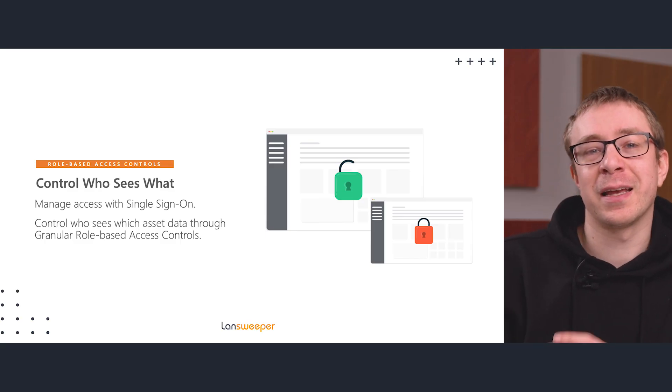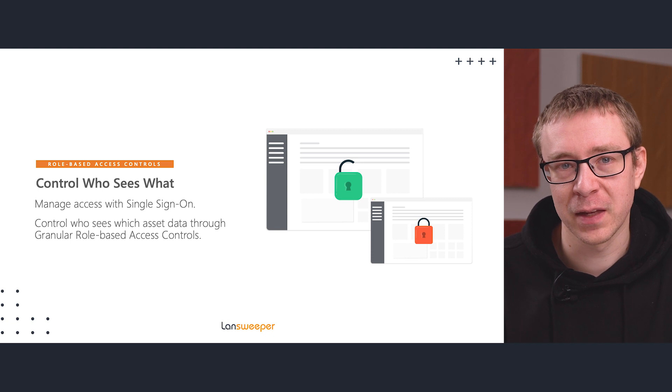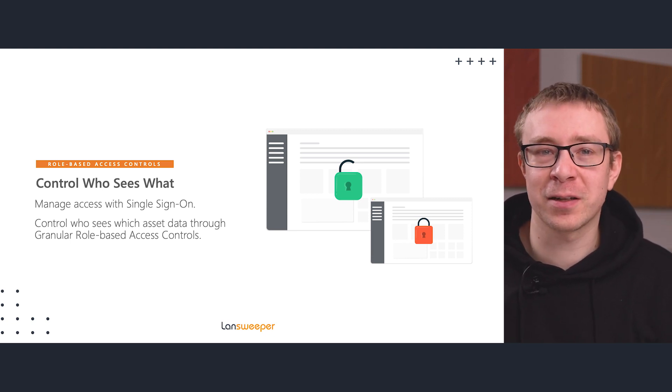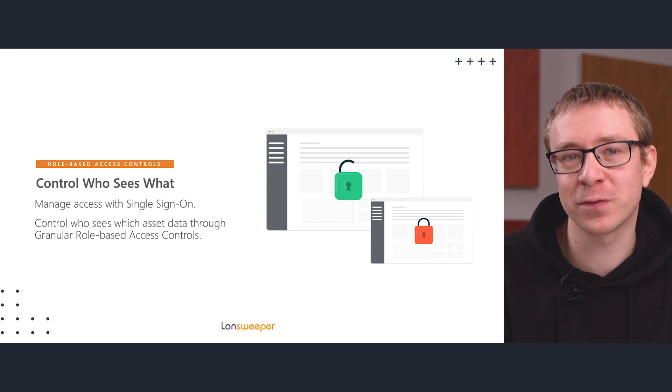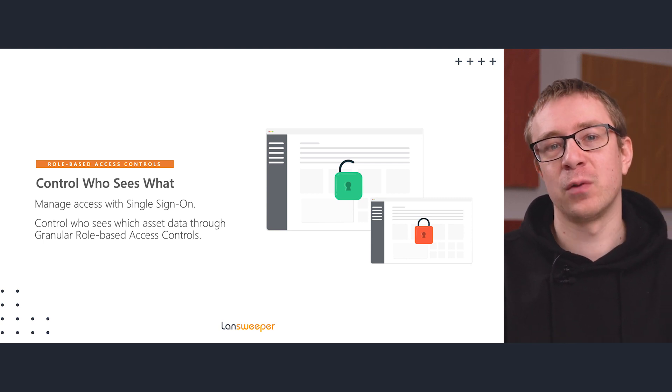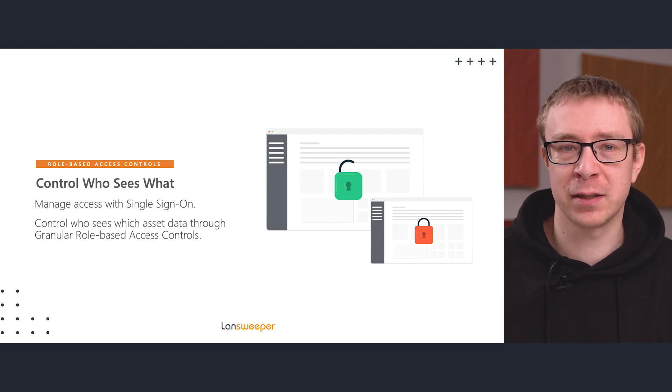In Lansweeper, it is possible to ensure that your users can only see the data they're allowed to see. That means regardless of how much data you put into Lansweeper, you can control that your personnel responsible for Linux machines, for example, can only see Linux machines — whether in their general inventory, reports, or other data-specific points in Lansweeper. That's the basic concept of role-based access control: ensuring people can only see what they're allowed to see, so they're not looking at data from other geographical locations, other departments, et cetera.